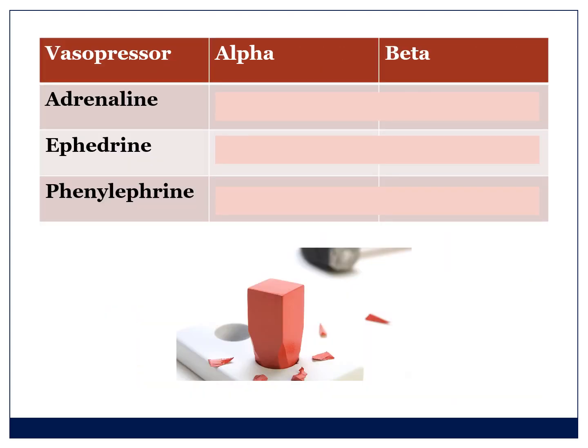The three most common drugs available in South Africa are adrenaline, ephedrine, and phenylephrine, and they stimulate those receptors differently. Adrenaline has very strong effects on both alpha and beta receptors. Ephedrine can be thought of as very similar to adrenaline — it works through an indirect action causing release of adrenaline, so you can expect similar results, except the response is not as profound. When your patient has hypotension but it's not extreme, you would choose ephedrine before moving to adrenaline.